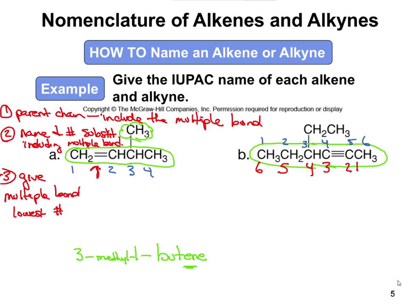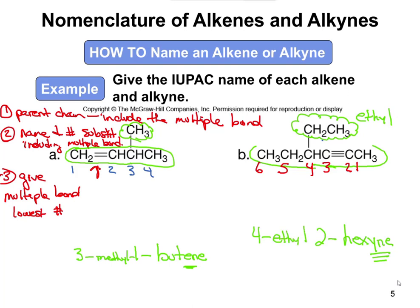A six-carbon chain is going to be hexane. But because we have a triple bond, we need a suffix that matches. For an alkyne, it's going to be Y-N-E — hexyne. Now we need to indicate where that triple bond is. It's going to be on carbon number 2, so it's 2-hexyne. And then we still have to take care of the group not part of the parent chain, which in this case is going to be an ethyl group, attached to carbon 4.